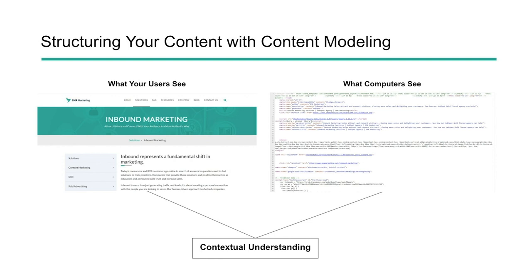That way they can know the intent of that content and show it to more people — the people who need the content that we're creating. We can't just overstep this part. We should make this a fundamental part of creating a content strategy so that everything we're doing is mapped together, makes sense, and our content is able to go further because what users see and what computers see are working together to create that deeper contextual understanding.